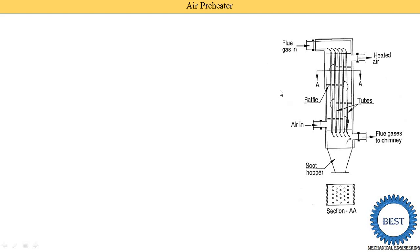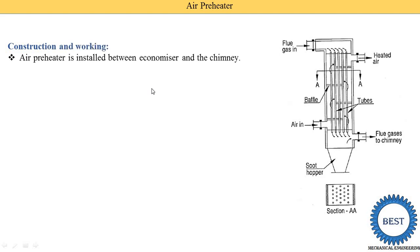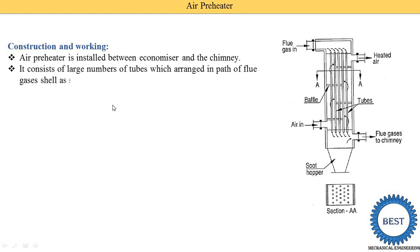Looking at the image of the air preheater, we can see a number of components. The air preheater is installed between the economizer and the chimney, because the exhaust gas from the boiler is first supplied to the superheater, then to the economizer, then to the air preheater, and finally goes to the atmosphere. It consists of a large number of tubes arranged in the path of the flue gases.